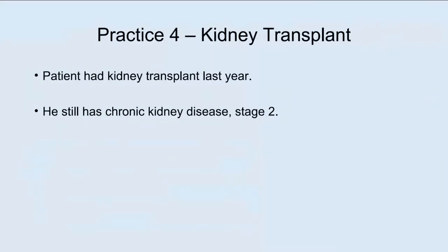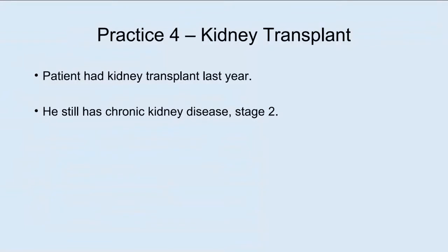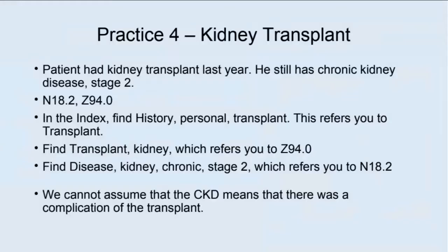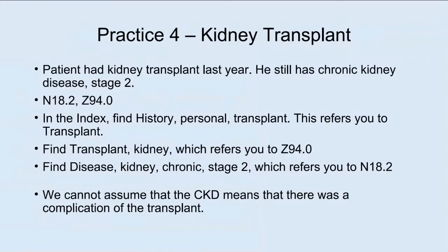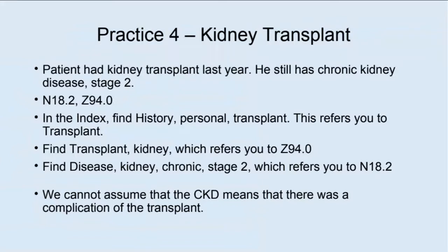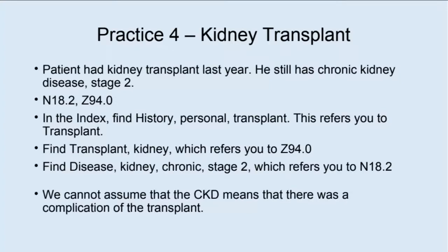Practice four: Patient had a kidney transplant last year. He still has chronic kidney disease, stage 4. This is not documented as a complication of the transplant. We're going to code N18.2 and Z94.0. We asked the physician, who said it is not a complication. In the index, find history, personal, transplant, kidney, which refers you to Z94.0. Find disease, kidney, chronic, stage 4, which gives you N18.2. Code N18.2 first, then Z94.0 — the reason they're being seen is the kidney disease.